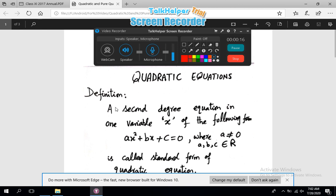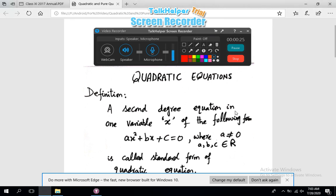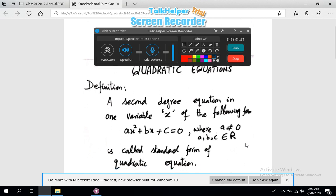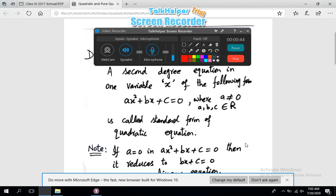First of all, we define quadratic equation. Viewers, a second degree equation in one variable x of the following form ax² + bx + c = 0, with condition that a ≠ 0 and a, b, c all belong to the set of real numbers, is called standard form of quadratic equations.